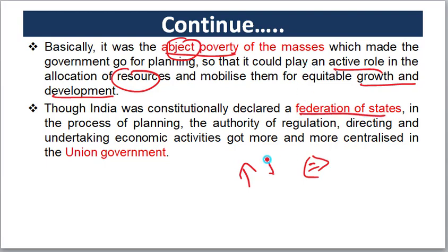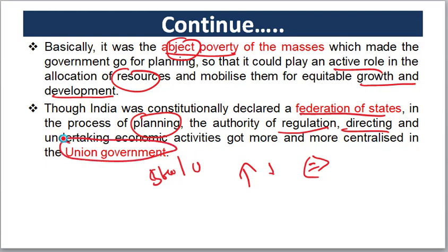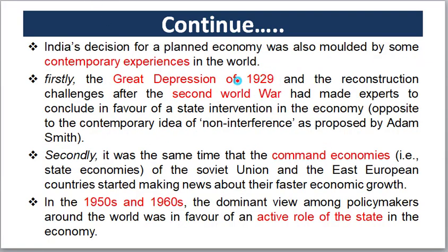In the Federation of States, the Union Government is a subject of both states and the union in economic planning. Regulations and directions are set under the federal framework, with a minimum and limited role for state governments in some areas. The Union Government is a key part of economic planning and economic activities. It was decided that a planned economy was a very good approach for India.